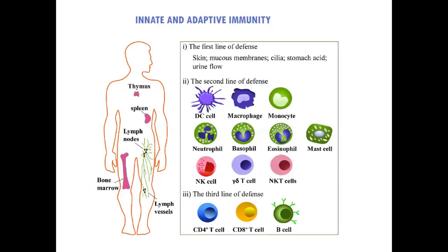The immune system consists of innate immunity and adaptive immunity. Innate immunity is the initial or first response to infection and consists of a first line of defense and a second line of defense. The first line of defense involves skin and mucous membranes, which prevent infection. The second line of defense occurs when the first line fails, involving cells like macrophages, monocytes, and neutrophils.